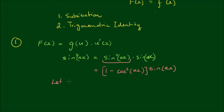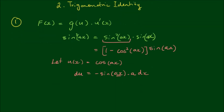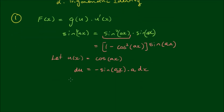Now we let u(x) equal cos(ax). Taking the derivative, we can write du equals negative sin(ax) times a dx — remember we have to apply the chain rule to what's in the parentheses. Rearranging, we get negative 1/a du equals sin(ax) dx.